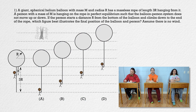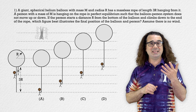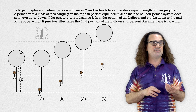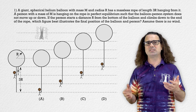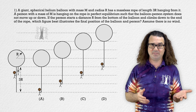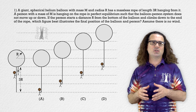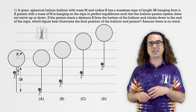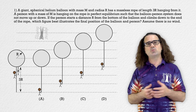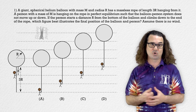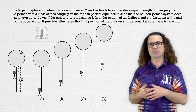Gotta love this question — spherical balloon, massless rope, floating in equilibrium, no wind. That is a lot of assumptions. I don't think this question is realistic at all. Valid point. You will likely run into questions on the AP Physics 1 exam which are not realistically possible in the world we live in. However, in order to allow you to demonstrate your understanding of physics principles, sometimes we do have to step into an ideal world. Please get used to it.